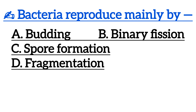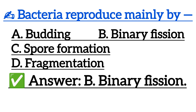Next one is: Bacteria are reproduced mainly by — Option A: Budding, Option B: Binary Fission, Option C: Spirula Formation, Option D: Fragmentation. Correct answer is Option B: Binary Fission.